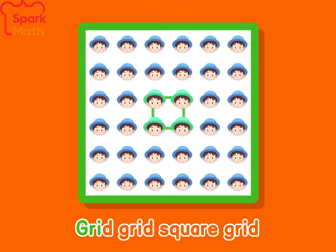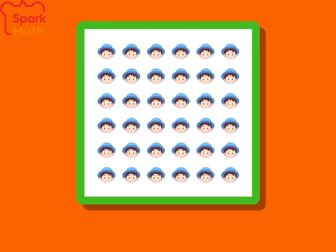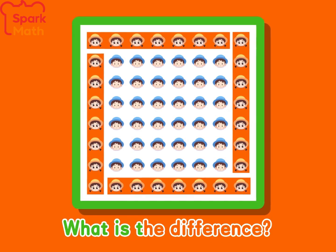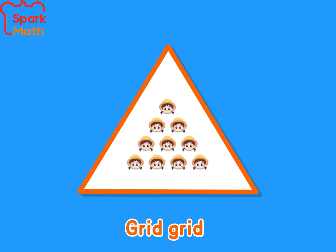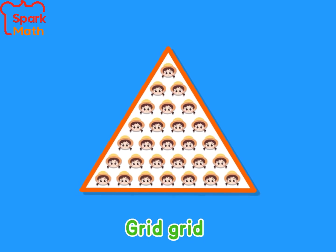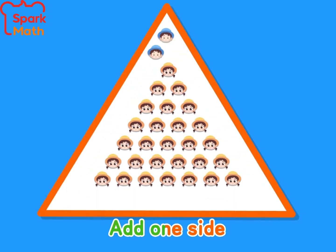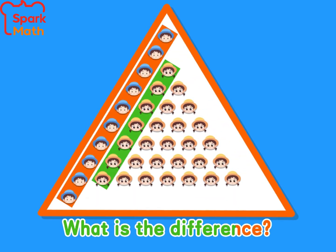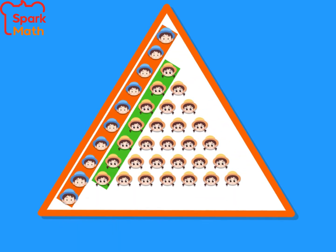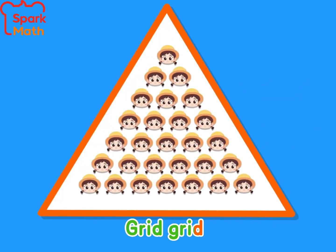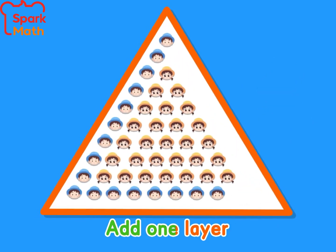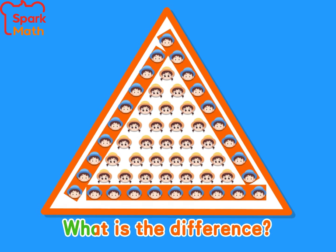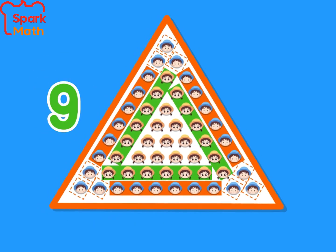2! Great square: add one layer — what is the difference? 8! Great triangular: add one side — what is the difference? 3! Great triangular: add one layer — what is the difference? 9!